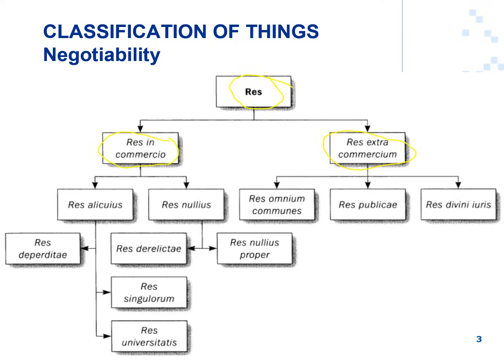The further subcategory for res in commercio — things in commerce — is a division drawn between things that are currently owned, which is res alicius, and things that are not currently owned, which is res nullius. Res alicius, things currently owned, can further be divided: things owned by individuals are res singularum, whereas things owned by corporate bodies are referred to as res universitatis.